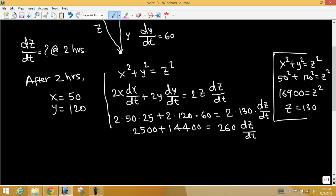So dz/dt is: add these two numbers and divide by 260. That's 16,900 over 260. Cancel 13 goes into both. Use your calculator, and it comes out to be 65. This is the distance in miles per hour.